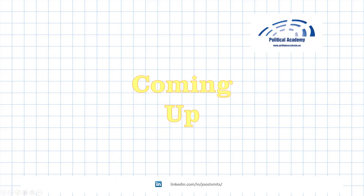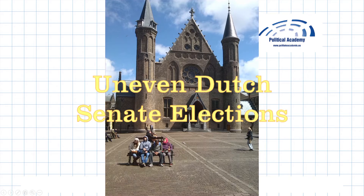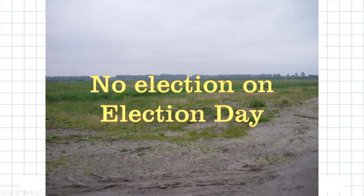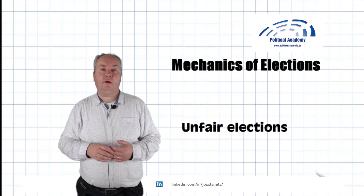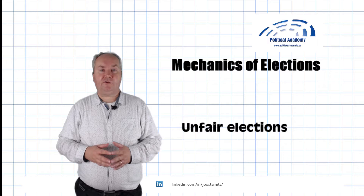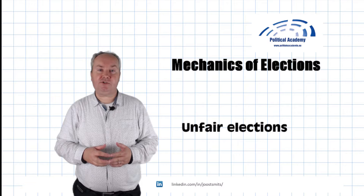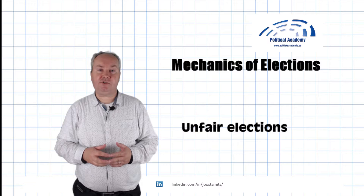Coming up in this video: how the Democrats can win the 2020 presidential elections, the uneven Dutch Senate elections, gerrymandering in Flanders, and no election on election day. Welcome back to the channel of the Political Academy. My name is Joost Smits. In this second part of a two-part video, I will show some examples of flaws in electoral procedures and how they can be taken advantage of at the expense of democracy. The first video was about ways to count votes and decide upon a winner.